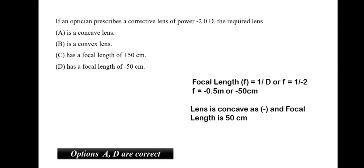If an optician prescribes a corrective lens of power minus 2D the required lenses. So, let us put it in the focal length formula. We know that focal length will be equal to 1 by diopter. So, here focal length will be equal to 1 by minus 2 which is about minus 0.5 meter. Now, we have to convert this into centimeters. Minus 0.5 meter will be equal to minus 50 centimeter. Now, this 50 centimeter is negative and when the focal length is negative we know that the lens is concave. Thus, A and D would be correct answers.